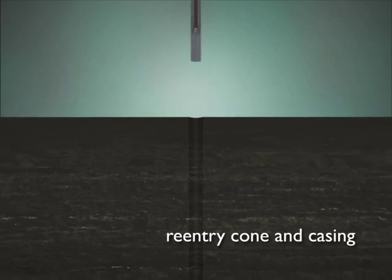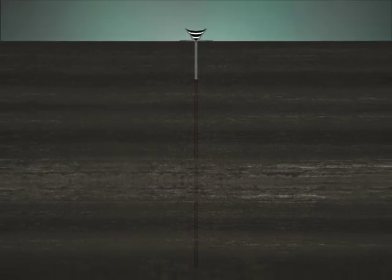Before a CORK can be installed, the borehole needs to be prepared by installing a re-entry cone, a big funnel, and casing, large pieces of pipe that help to keep the hole open. Different casing diameters, lengths, and materials are used depending on the environment and experimental goals.